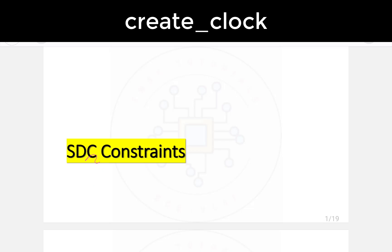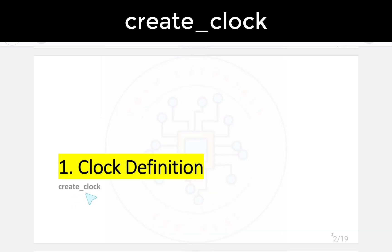In this video let us try to understand how to write HDC constraints. HDC stands for Synopsis Design Constraints. The first constraint we are going to understand is clock definition. The constraint command is create_clock.